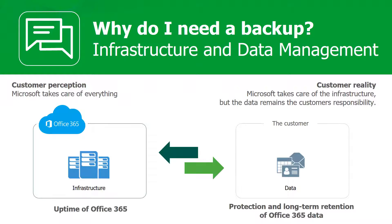The backup and recoverability that Microsoft provides and what users assume they are getting are often two totally separate things. Microsoft Office 365 uses geo-redundancy, which is often mistaken for backup. A backup, from Veeam's perspective, takes place when a historical copy of data is made and stored in one or several locations, so if data is lost, accidentally deleted, or maliciously attacked, there will be an easily accessible copy elsewhere. Geo-redundancy, on the other hand, protects against site failure and hardware failure — keeping users always on and oblivious to underlying infrastructure issues. On the left-hand side is the customer perception; on the right is the reality that Microsoft does a fantastic job of taking care of infrastructure. But the data remains the customer's responsibility.